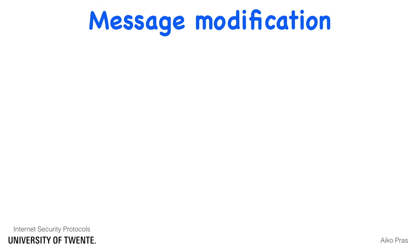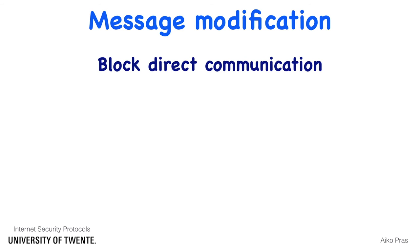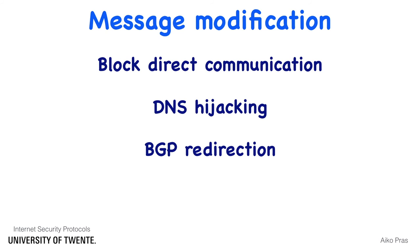Message modification requires the ability to block direct communication between Alice and Bob, for example by DNS hijacking or BGP redirection, followed by the ability to masquerade as Alice while sending data to Bob.